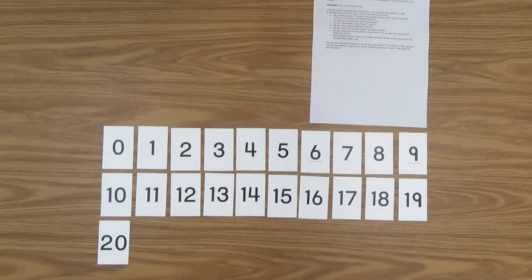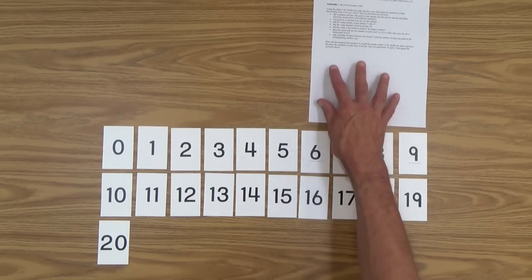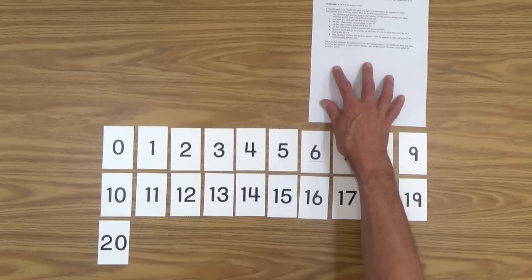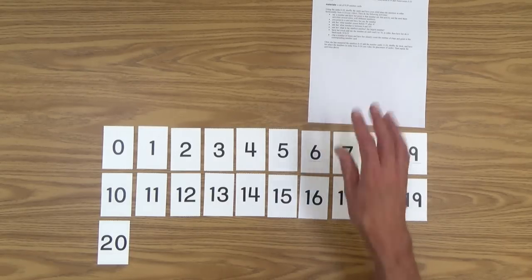And once you do that, you can go back to your printable here, zero to 20 number card activities, and you can work your way through these just like we did in the last lesson.